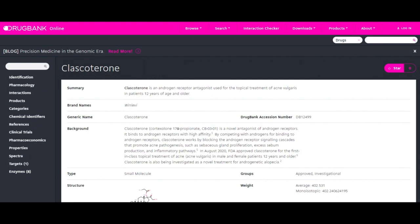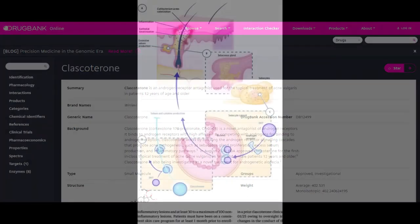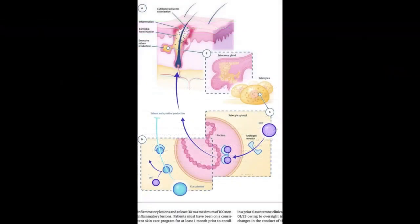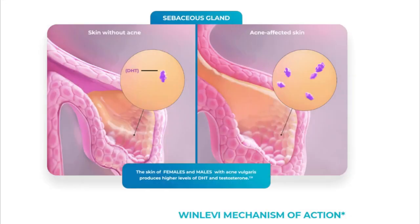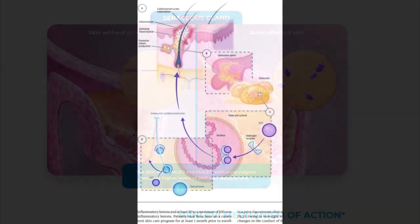In the case of clascotorone, also known as CB-0301, we have another topical anti-androgen that was approved by the FDA to treat acne and may soon be approved to treat androgenetic alopecia. Its mechanism works similar to RU58841 — it's meant to saturate the skin and scalp and bind to androgen receptors, preventing DHT from over-exciting sebaceous glands to produce more sebum and blocking the androgen receptor in hair follicles to prevent miniaturization.